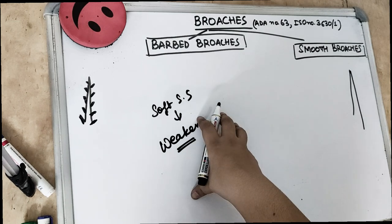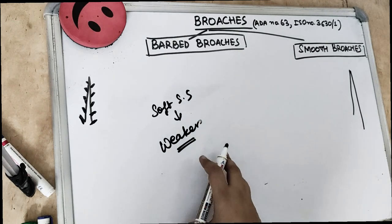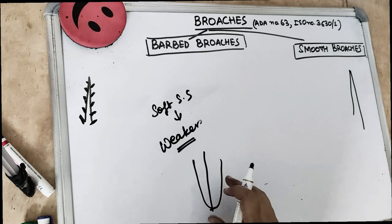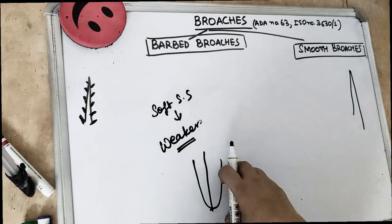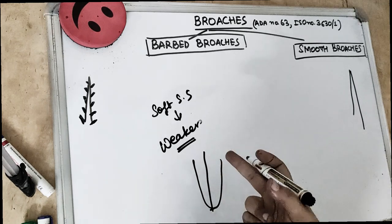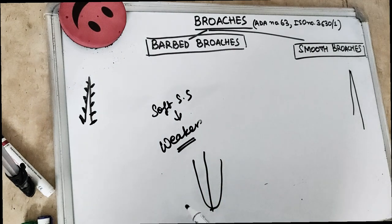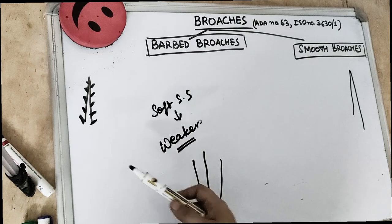So they are actually weaker and how do we use these? We take this broach and we don't put it till the working length. We actually make sure that we are making it short of the apex because they have spikes. And once they are inserted into the canal, they are rotated to 60 degrees and they engage the fibrous tissue and then they are withdrawn.